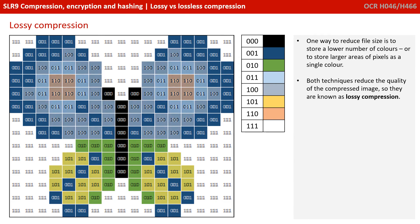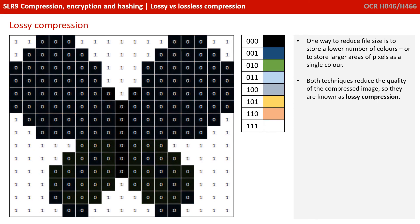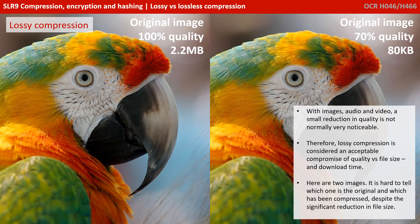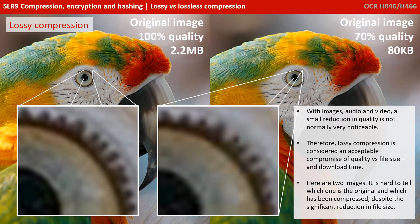One way to reduce the file size is to store a lower number of colours, or to store larger areas of pixels as a single colour. Both techniques will reduce the quality of the compressed image, so these are known as lossy compression methods. With images and indeed audio and video, a small reduction in quality is not normally very noticeable, certainly by the human eye. Therefore, lossy compression is considered an acceptable compromise of quality versus file size and download time.